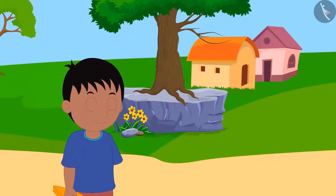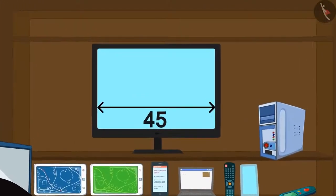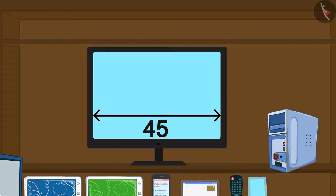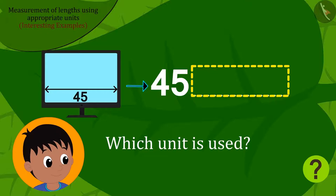When Raju was returning home, in a shop on the way, he saw a computer monitor like this. On the monitor, the screen size was written in this way. But only the number 45 was written below that. Raju came to know that the length of the screen of the monitor was 45, but Raju did not understand which unit was used for it.